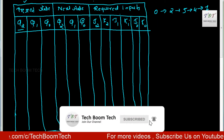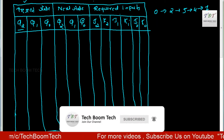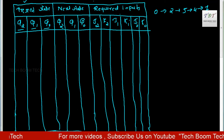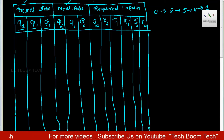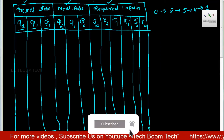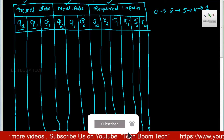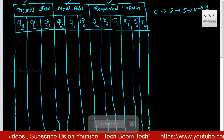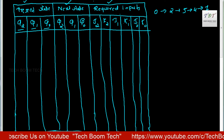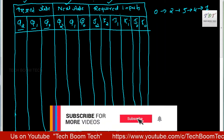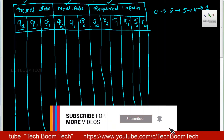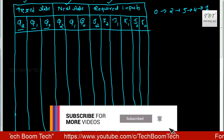The state table will have columns for present state Q2, Q1, and Q0, followed by the next state. We also need the required inputs for the JK flip-flop table: J2, K2, J1, K1, J0, and K0. The JK flip-flop has two inputs, J and K.